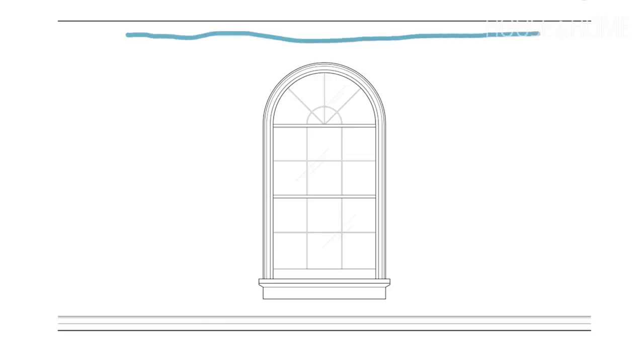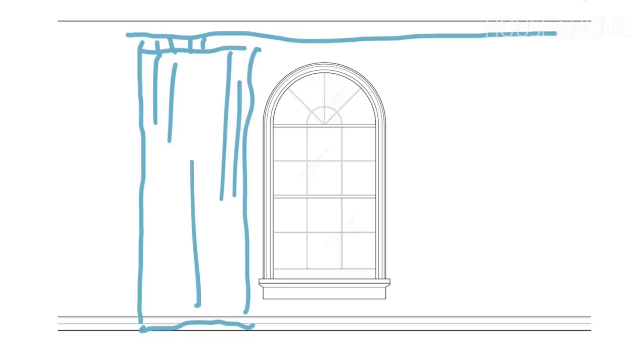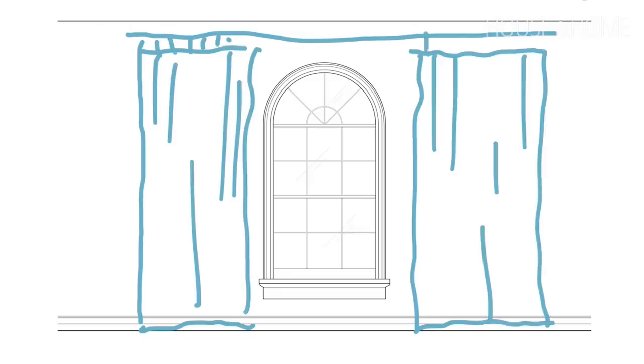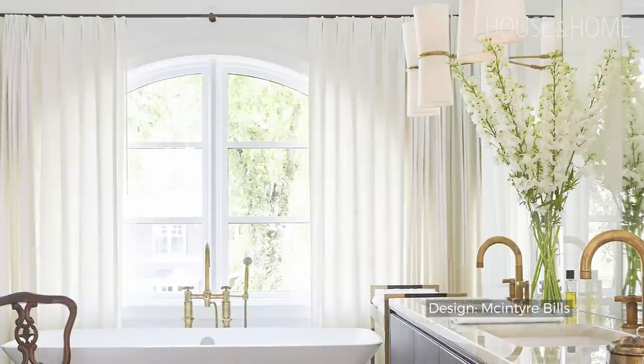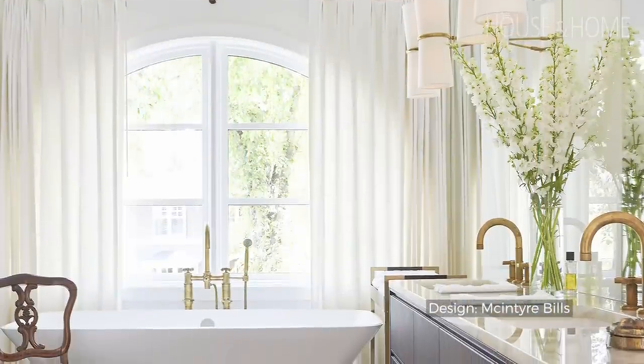In an ideal world, you have a nice big arched window and a high ceiling with clear space either side, and you can dress it with just a nice simple rod and drapery down either side that you can pull across for privacy. They can be sheers, they can be solid, whatever your needs are.